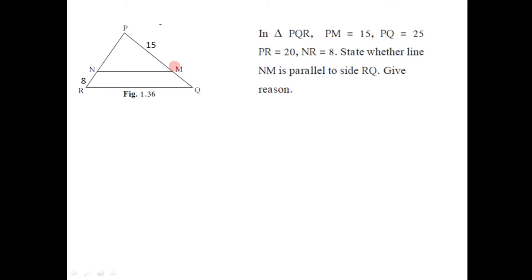If we consider this triangle, the lengths of PM and PQ are given, so we can find the length of MQ. Similarly, the lengths of PR and NR are given, so we can find PN. We have to decide whether segment NM is parallel to side RQ, so we are going to use the converse of the basic proportionality theorem. First, we should find the ratios of the two segments divided by NM. In triangle PQR, segment NM divides two sides PR and PQ at points N and M, giving us segments PN and NR on side PR, and PM and MQ on side PQ.